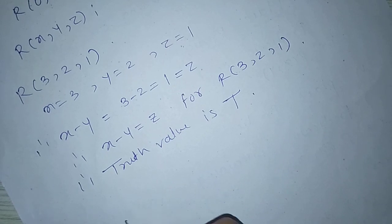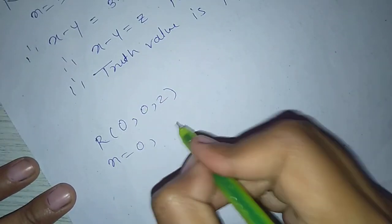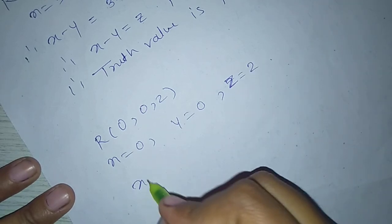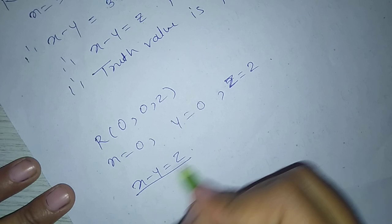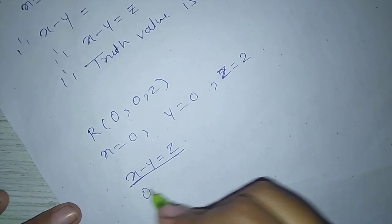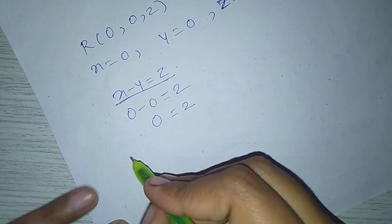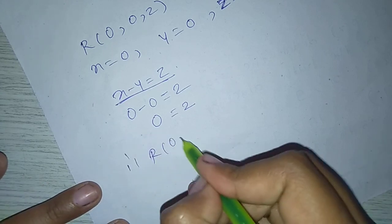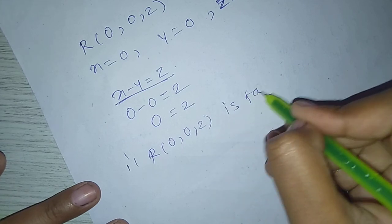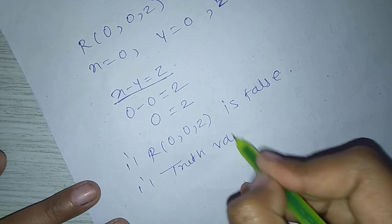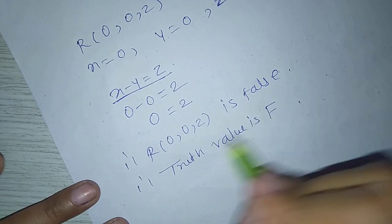Next, find r(0, 0, 2). Here x = 0, y = 0, z = 2. The statement x - y = z gives 0 - 0 = 2, i.e., 0 = 2. But 0 is not equal to 2. Therefore, r(0, 0, 2) is false, and the truth value is F.